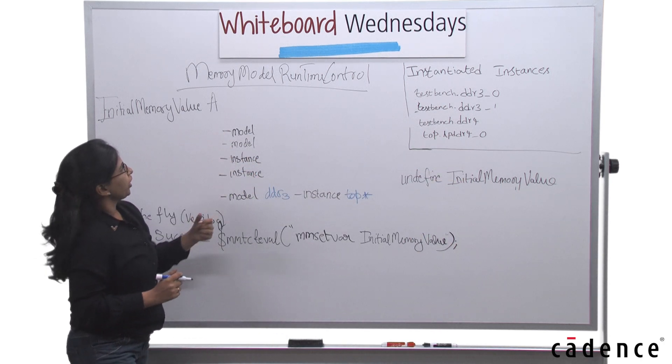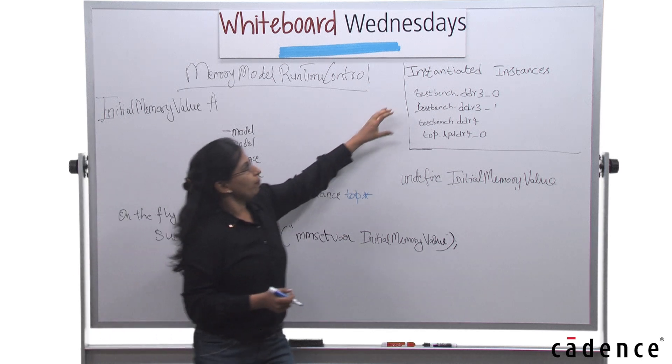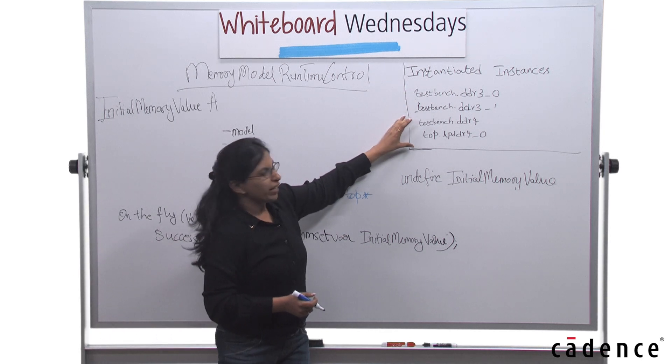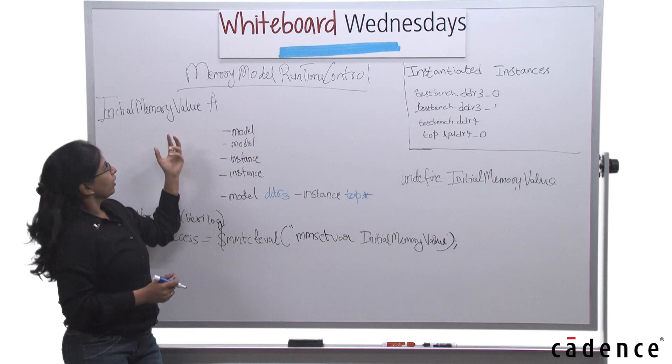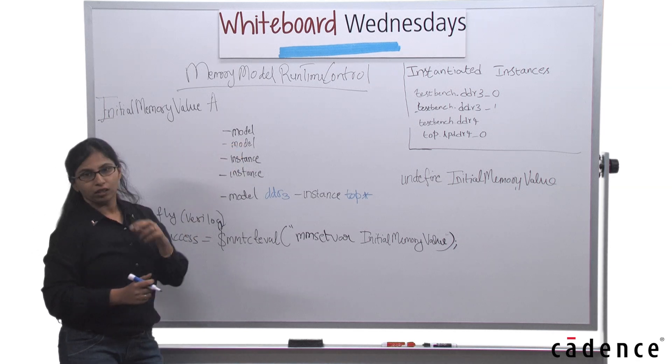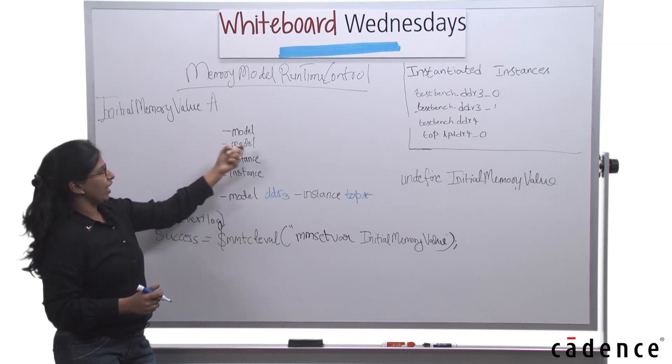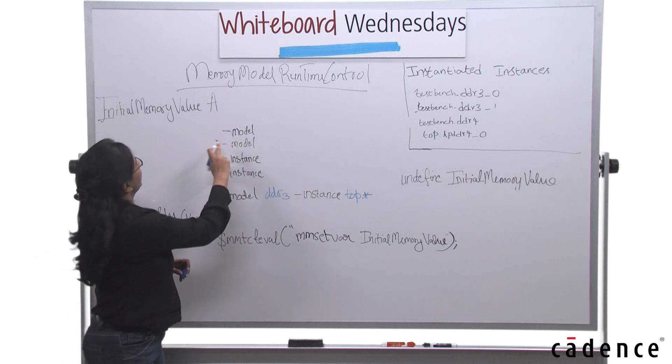So now, let's assume you want to change this either based on the model or based on the instance. Then this can be done with two parameters. One is dash model and one is called dash instance.